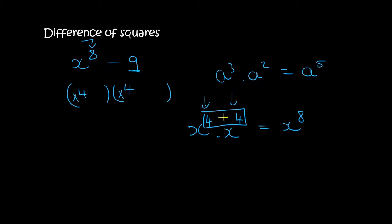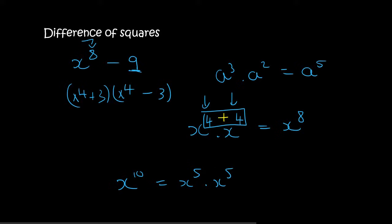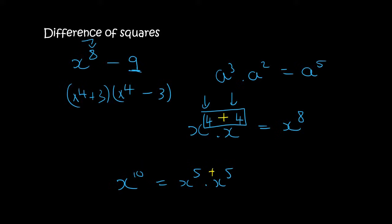Then what times what gives you 9? Well that's easy — that's just 3 times 3. Then one of them gets a plus and one gets a minus. Please remember: if I gave you x¹⁰, that's the same as x⁵ times x⁵. Why? Because we add these exponents — we don't multiply them.